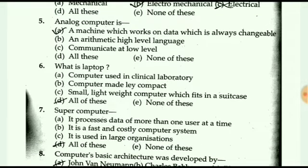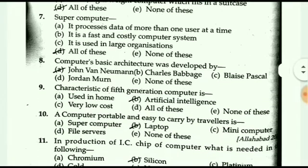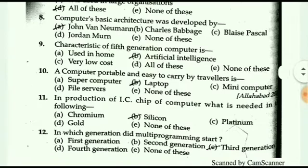The analog computer is a machine that works on data which is always changeable. Next question: what is a supercomputer? The answer is all of these — a supercomputer processes data of more than one user at a time. It is a fast and costly computer system used in large organizations.